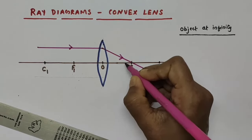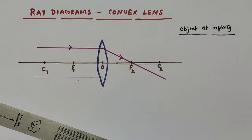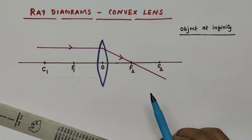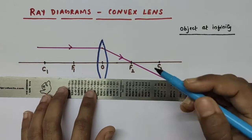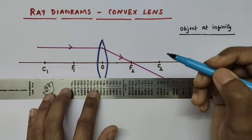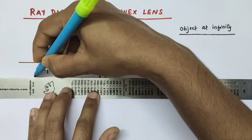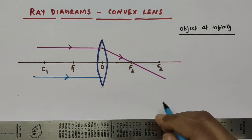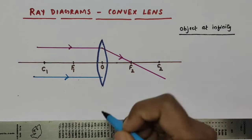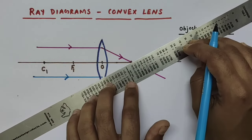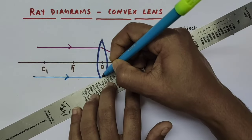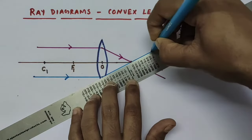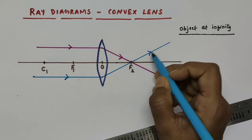So this is the refracted ray — we got one refracted ray. For image formation, we need to consider at least two rays coming from the same part of the object. Since our object is at infinity, the second ray will also be parallel to the principal axis. So I am taking a second parallel ray of light coming from infinity. After refraction, this ray will also pass through the principal focus on the other side — that is through F2. So this is the second refracted ray.